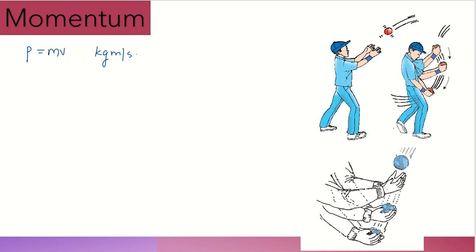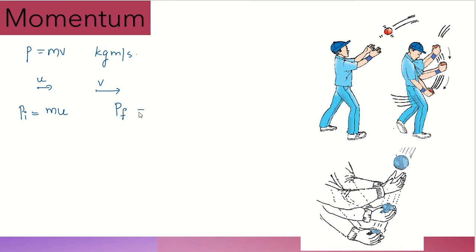Now let us start. We will apply a force, then write the initial velocity as U and final velocity as V. P initial is equal to M into U, and P final is equal to M into V.